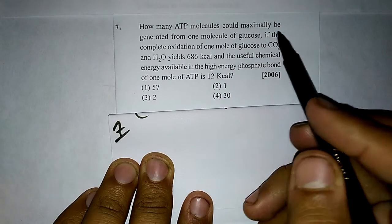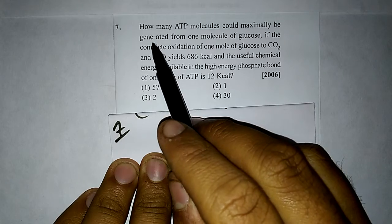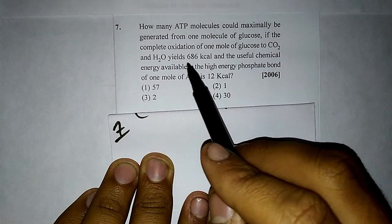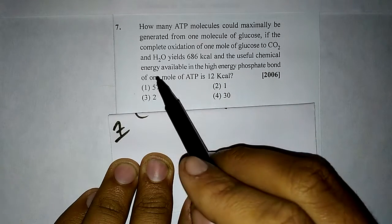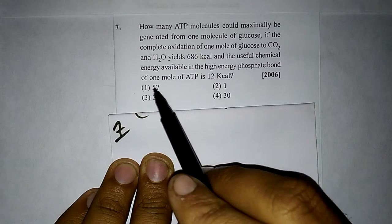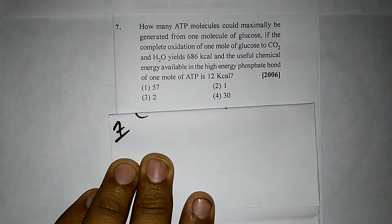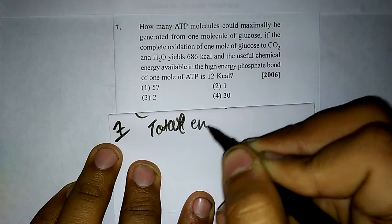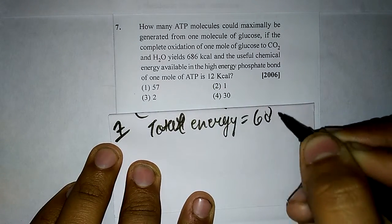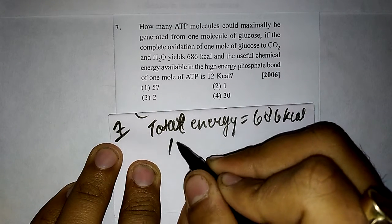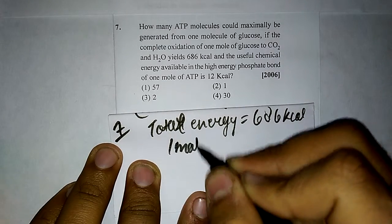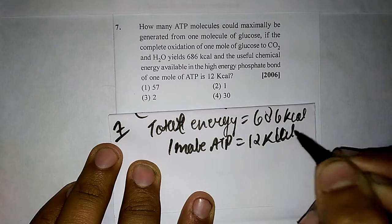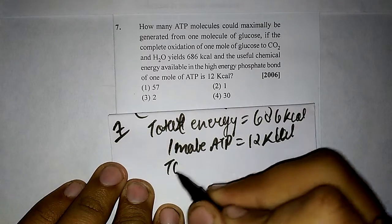How many ATP molecules could maximally be generated from one molecule of glucose? If the complete oxidation of one mole of glucose releases 686 kilocalories, and the useful chemical energy available in the high-energy phosphate bond of one mole of ATP is 12 kilocalories — total energy released is 686 kcal and 1 mole ATP equals 12 kcal — so how much total ATP is going to be?